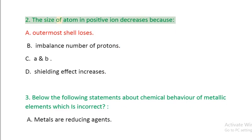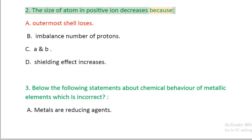Question 2: The size of atom in positive ion decreases because: A. Outermost shell loses, B. Imbalance number of protons, C. A and B, D. Shielding effect increases.